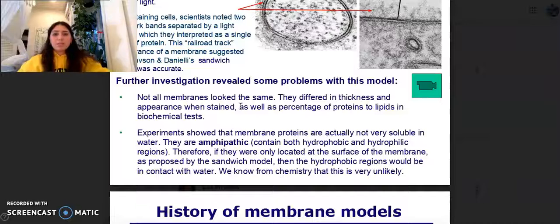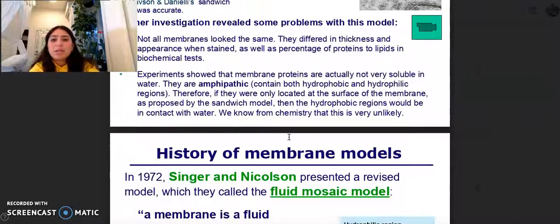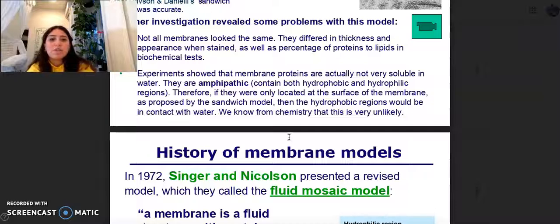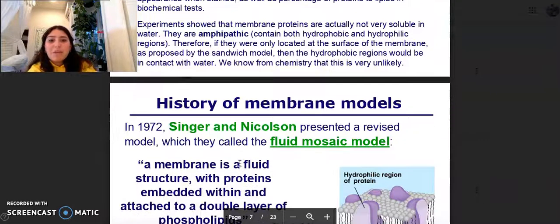This railroad track appearance of a membrane suggested that Davison and Danielli's sandwich model was accurate. To further investigate some of these problems with the model, not all membranes look the same. They differed in thickness and appearance when stained, as well as the percentage of proteins to lipids in biochemical tests. The experiments showed that membrane proteins are actually not very soluble in water. They are amphipathic, they contain both hydrophobic and hydrophilic regions. Therefore, if they were only located at the surface of the membrane as proposed by the sandwich model, then the hydrophobic regions would be in contact with water.